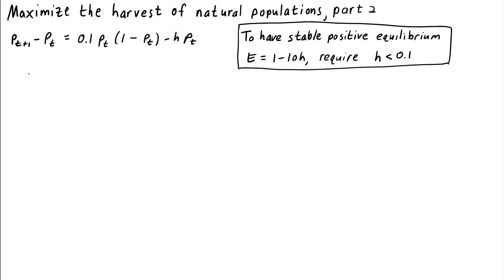So far we've determined that if the harvesting rate is less than 0.1, the low density growth rate will have a stable positive equilibrium at E equals 1 minus 10H. The idea is that if we keep harvesting using the effort H, the population size will eventually tend toward this stable equilibrium.